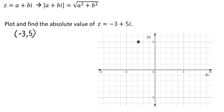So basically, the absolute value of z means that we're finding the distance from our origin to that point. So that's our absolute value.